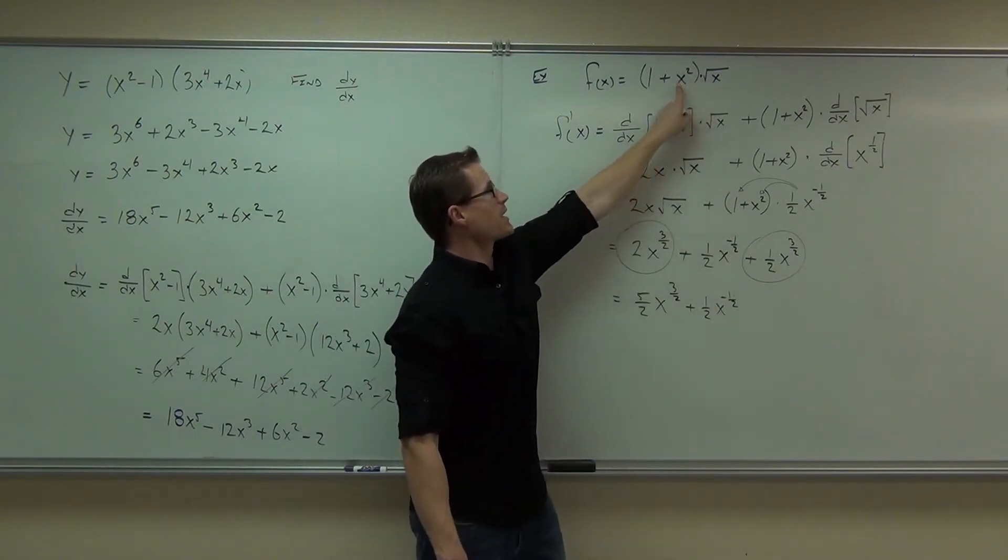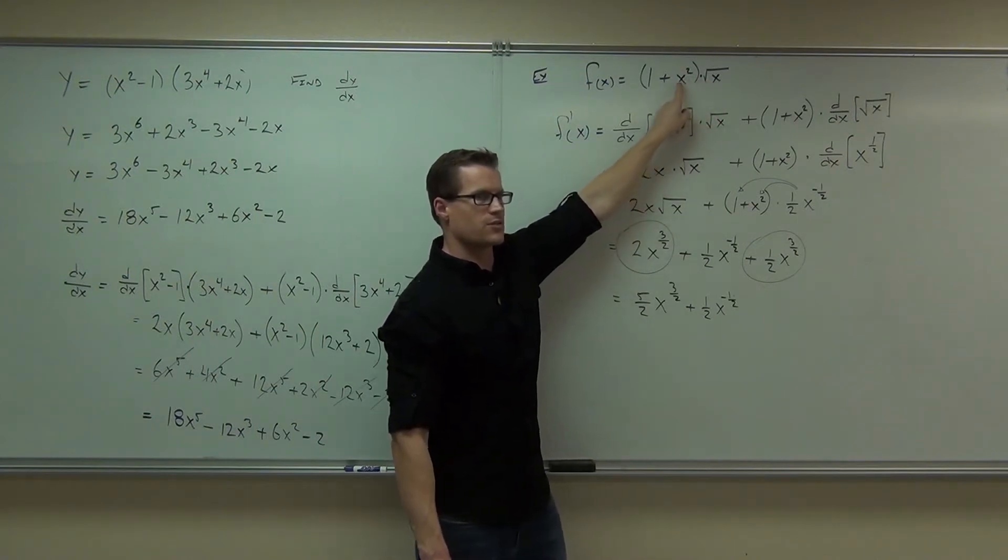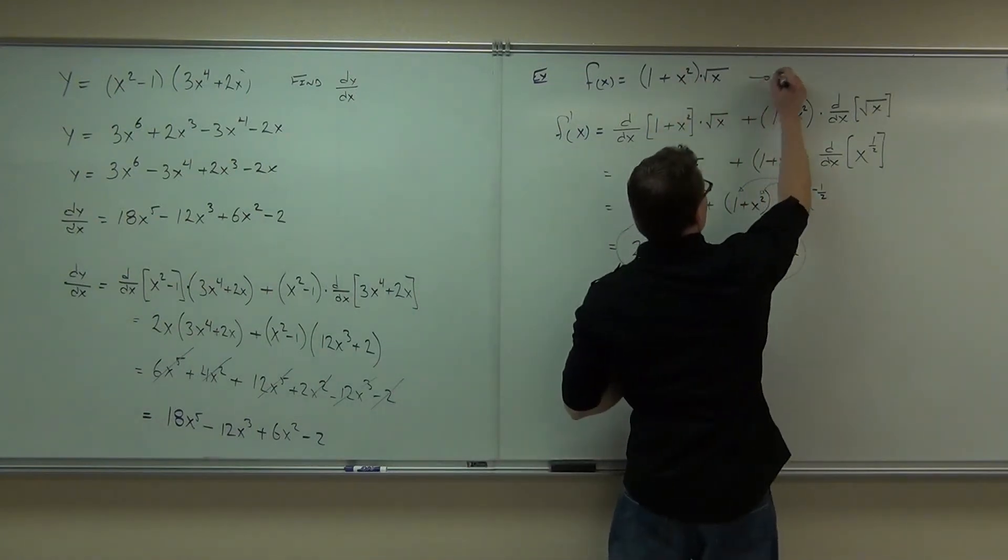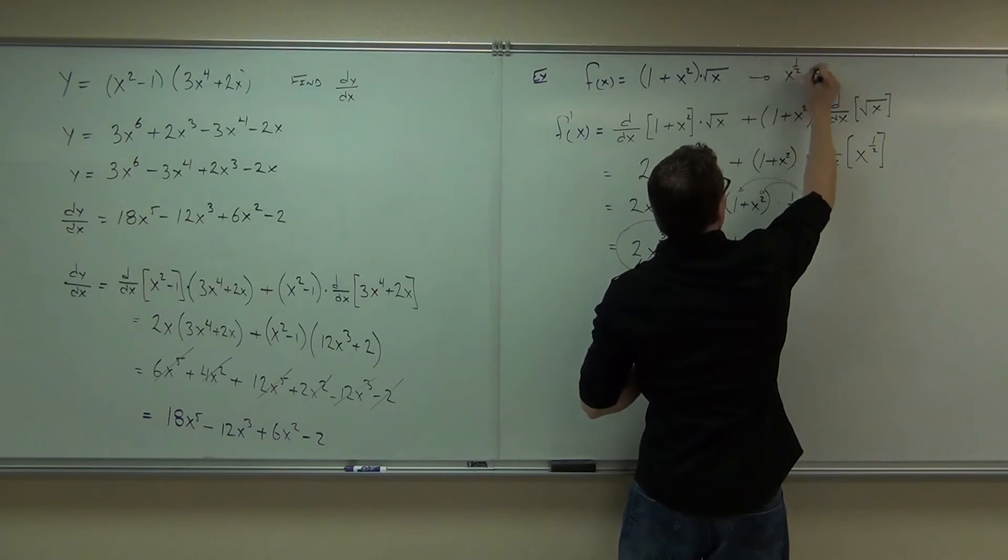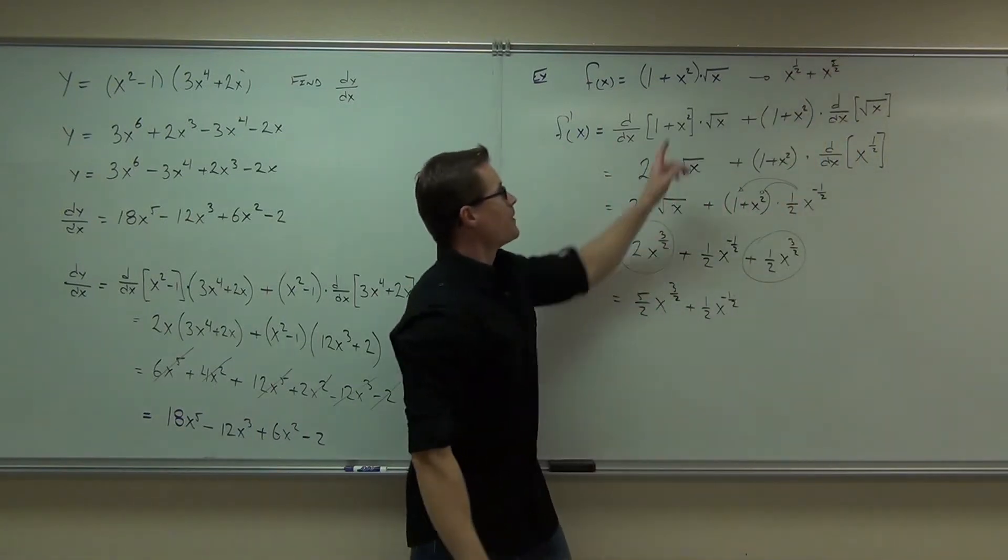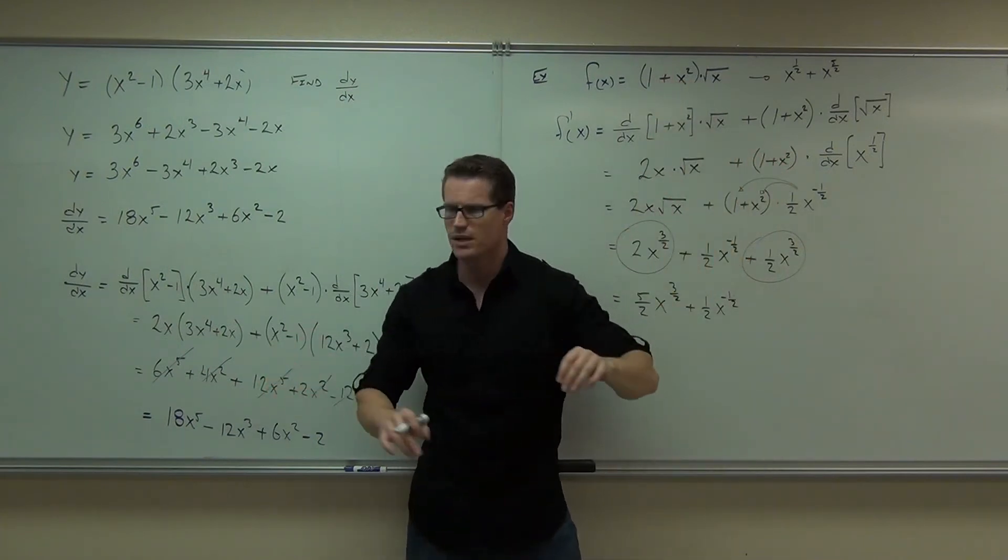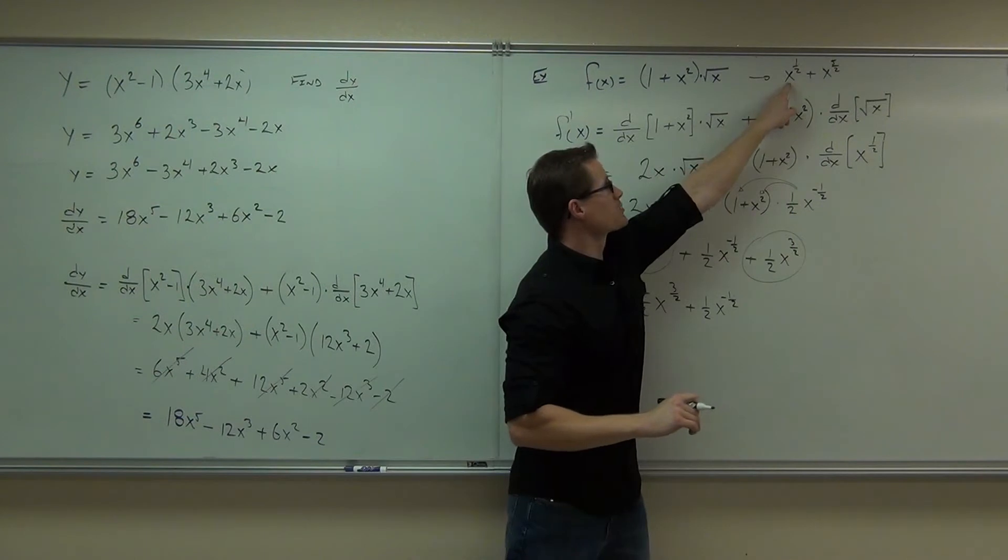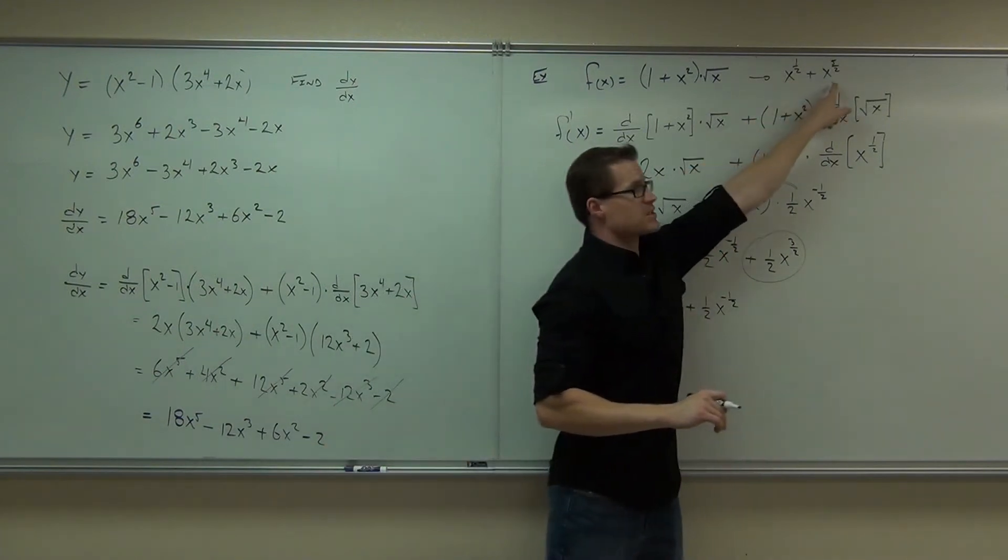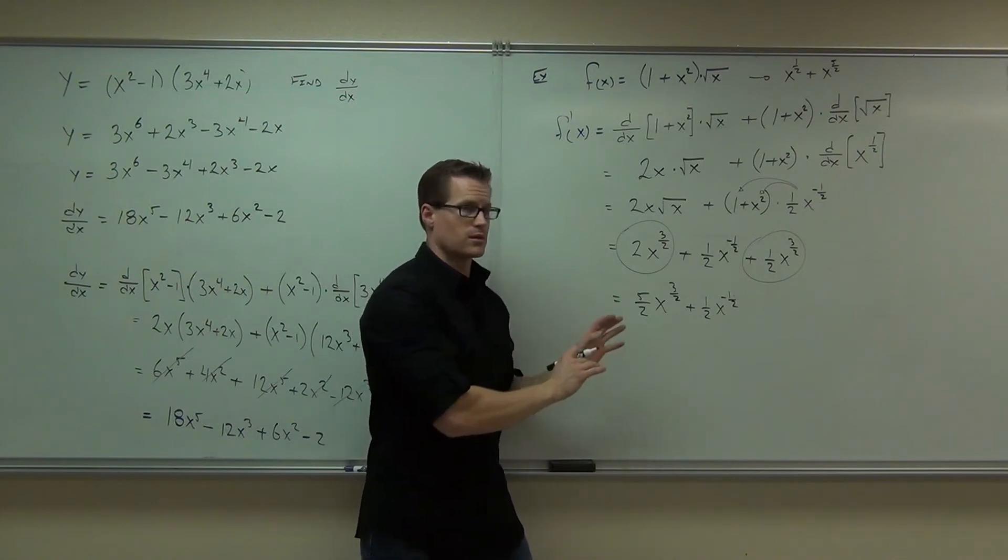Distribute this. This is going to be x to the 5 halves. See the 5 halves out of that? x to the 5 halves. 1 half plus 2. x to the 1 half plus x to the 5 halves. That's what that is distributed. If you can't get that, do it later on your own. Distribute that and figure out those exponents. This derivative is that piece right there. The piece of this derivative is 5 halves x to the 3 halves. It's right there. It's the same thing.